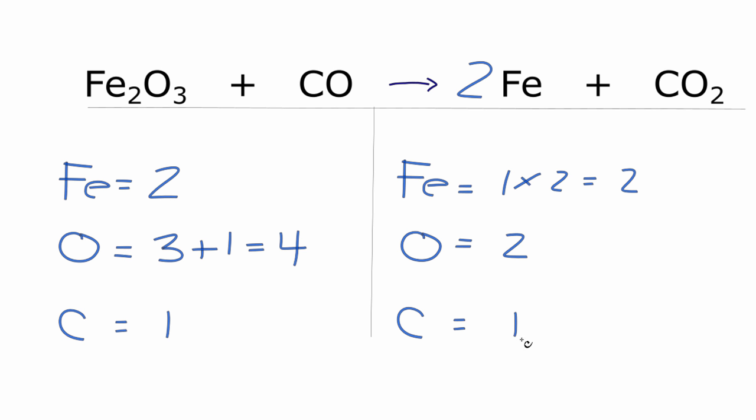And the carbons are already balanced. So it looks like to balance the equation, all I need to do is put a two in front of the CO2, and then two times two would give me four oxygens. But I also need to update the carbon.